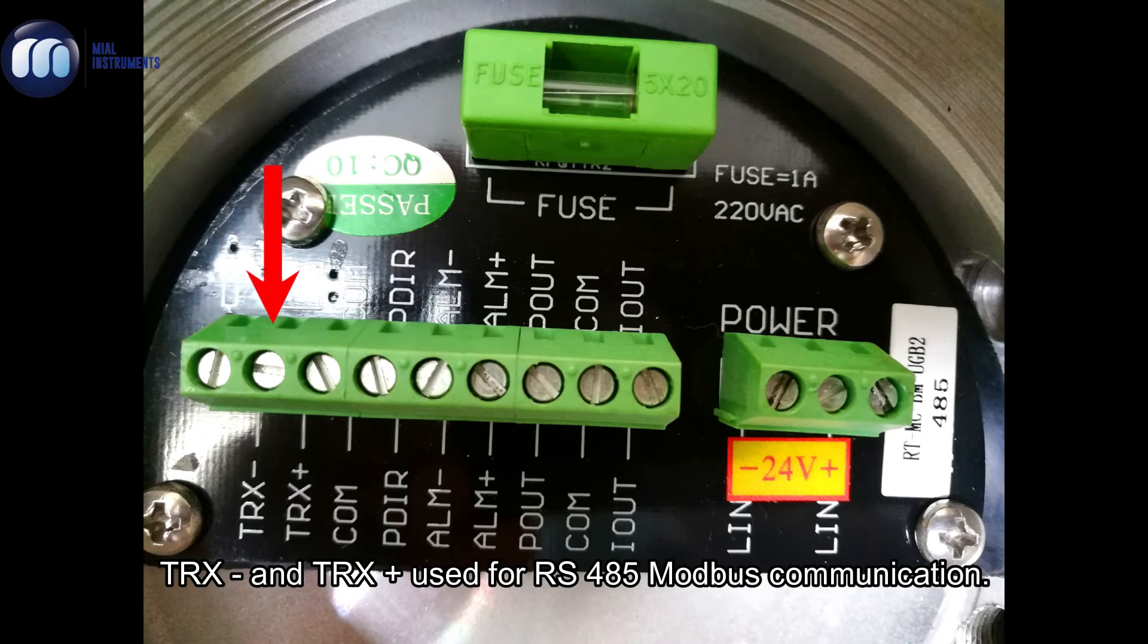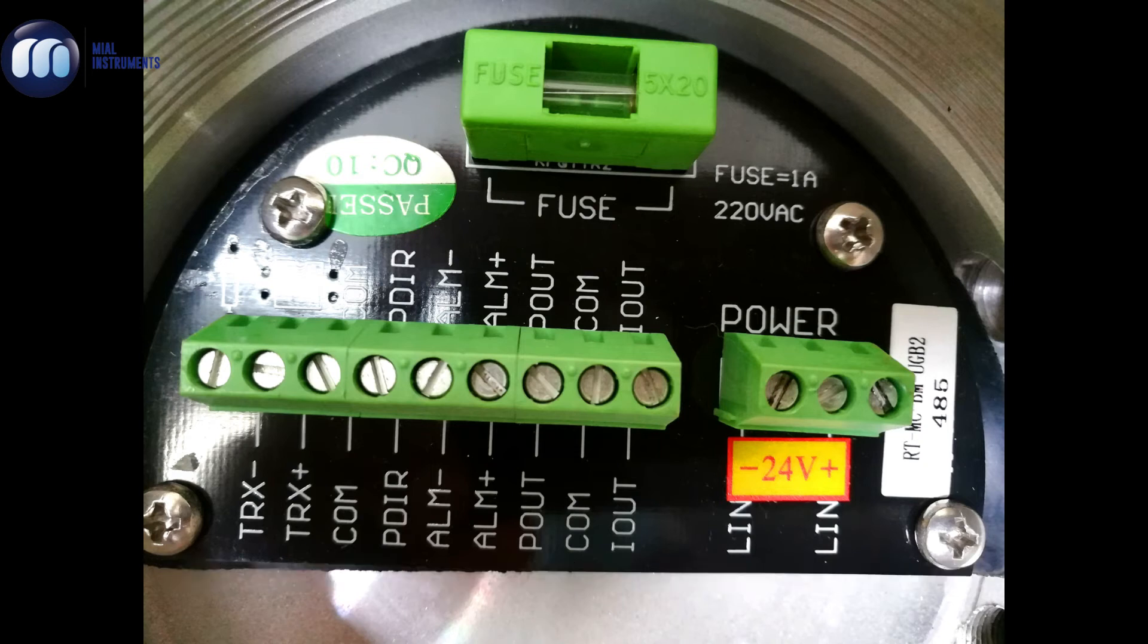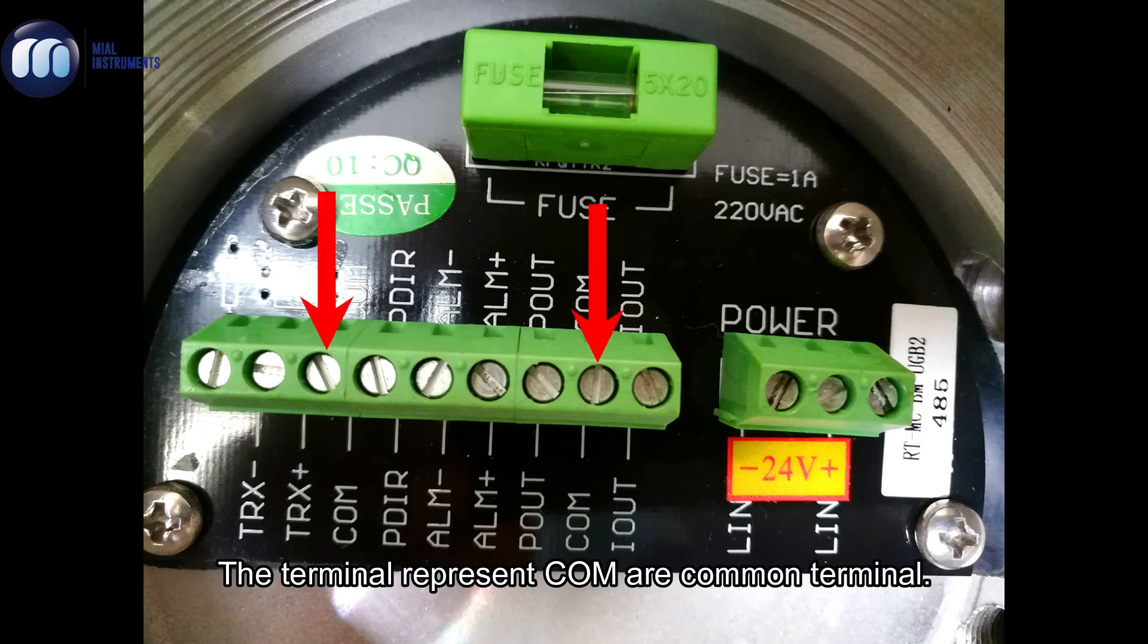TRX minus and TRX plus are used for RS-485 Modbus communication. The terminals marked COM are common terminals.